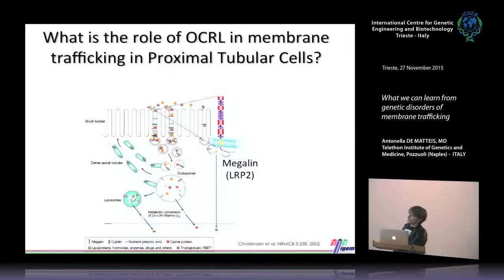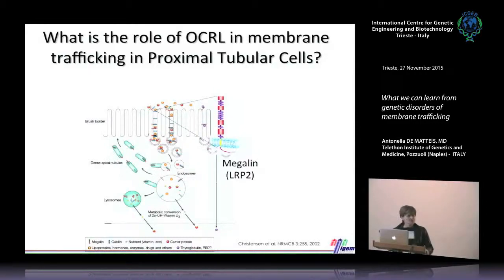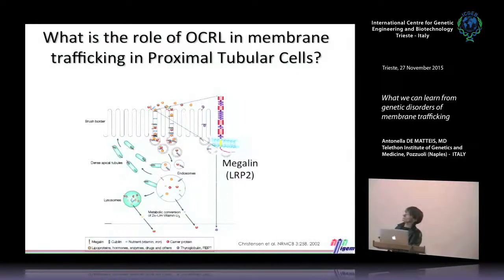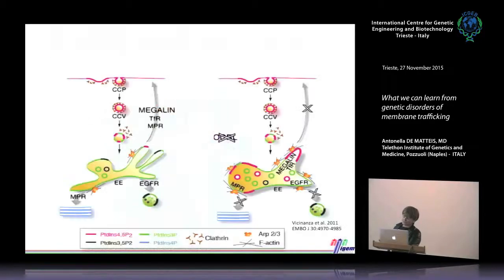We studied the role of OCRL in proximal tubule cells also obtained directly from patients. This is an interesting feature of this condition because there is usually a shedding of proximal tubule cells in the urine — one can access patient cells simply by collecting urine, recovering and immortalizing the cells, and studying these cell models. In addition, we used cell lines derived from proximal tubule cells.